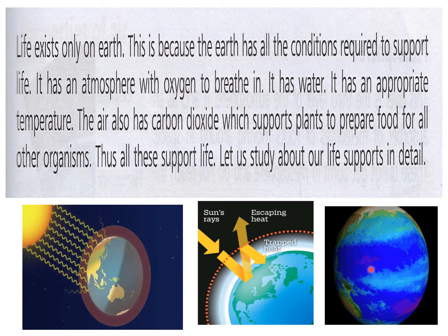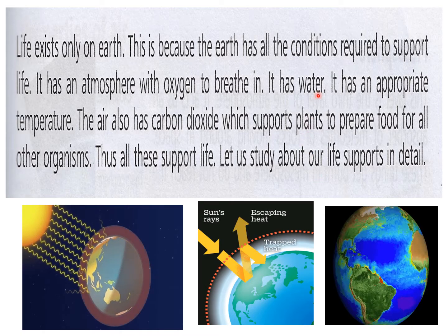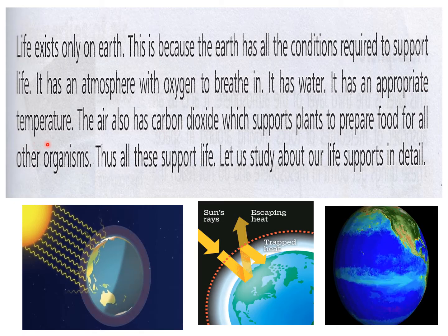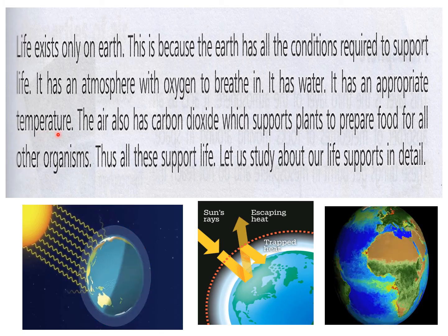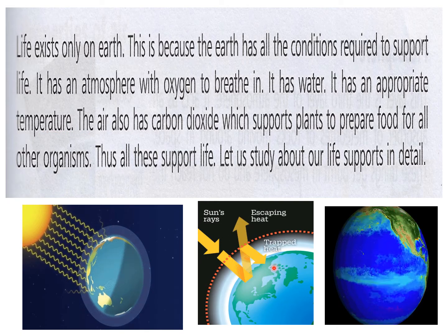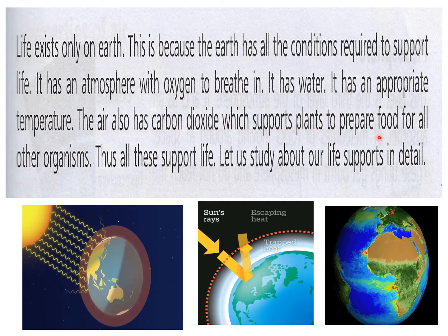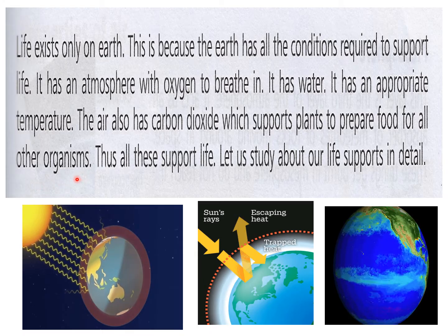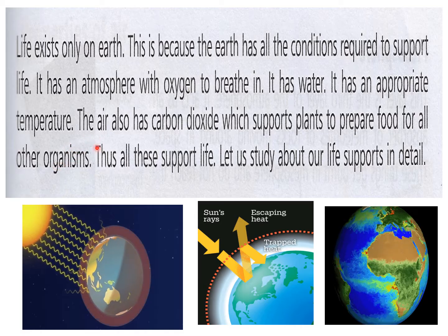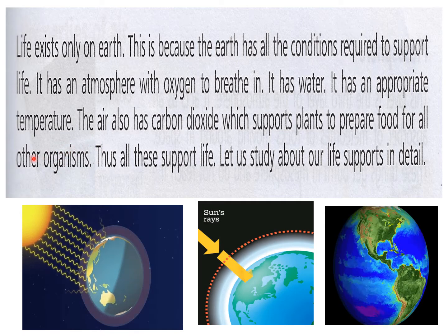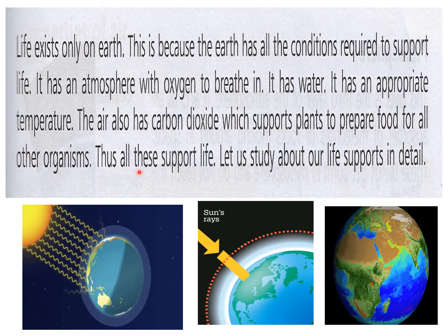Earth also has water — three-fourths of the surface of the earth is water, as seen in the blue portion on the globe. It has an appropriate temperature because carbon dioxide in the atmosphere traps sunlight and keeps the temperature on earth at a level we need to survive. The air also has carbon dioxide which supports plants in preparing food, as plants are the primary producers in the food chain.